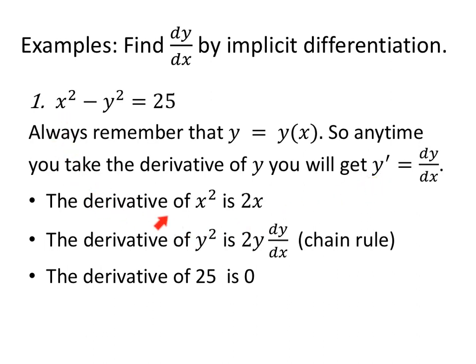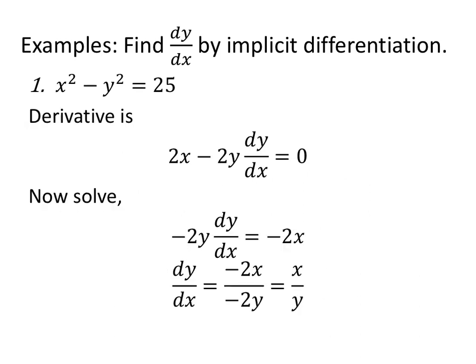For x squared, the derivative is 2x. For y squared, the derivative is 2y — derivative of the outside, bring down the 2, leave the y alone — but don't forget to multiply by the derivative of the inside, so that dy/dx must be there. On the right-hand side, the derivative of 25 is 0.